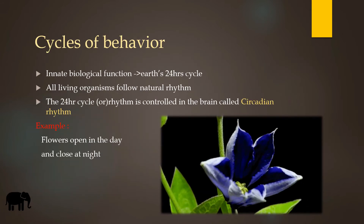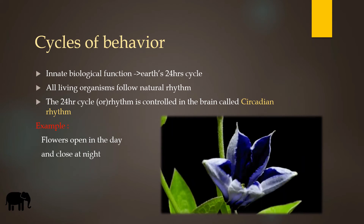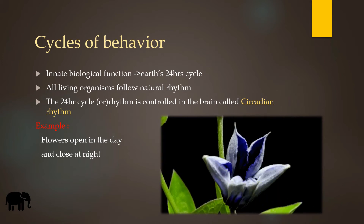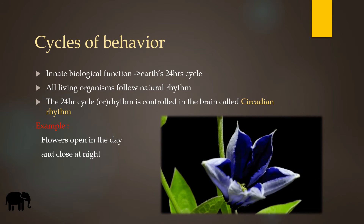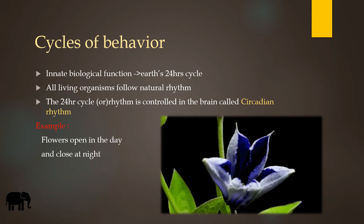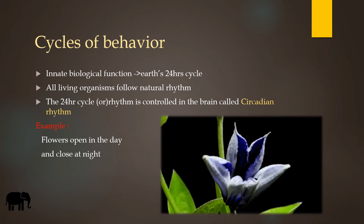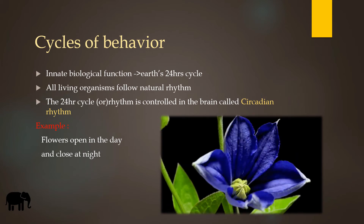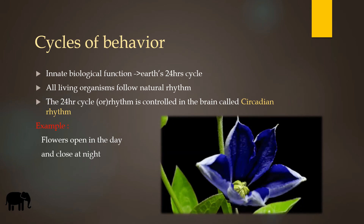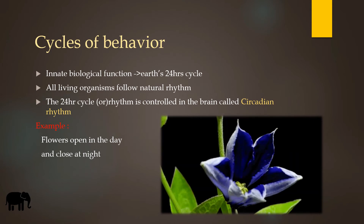Cycles of behavior: the timing of many innate biological functions is tied to Earth's 24-hour cycle. All living organisms follow a natural rhythm. This 24-hour cycle, called the circadian rhythm, is controlled in the brain.